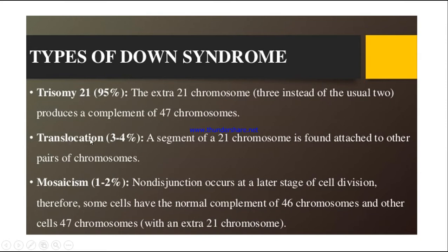Next is translocation, which accounts for 3 to 4% of babies born with Down syndrome. A segment of the 21st chromosome is found attached to other pairs of chromosomes, meaning it has changed location or position, resulting in 3 chromatids in the new chromosome pair instead of 2.